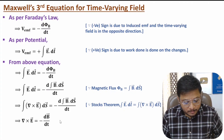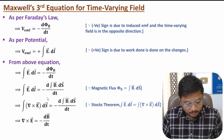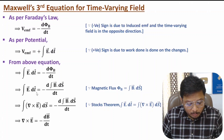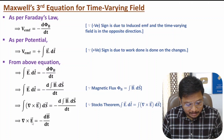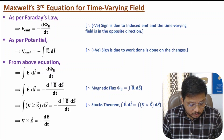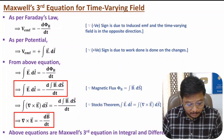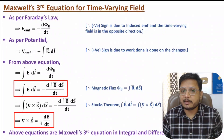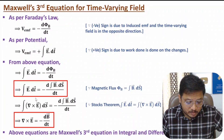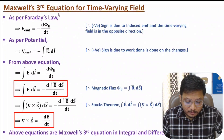We now have two equations: the first is in integral form, and the second is in the form of rate of change of field with respect to time, which is the differential form. These two equations are Maxwell's third equation for time-varying field — the integral form and the differential form.